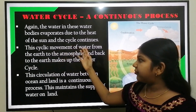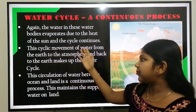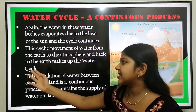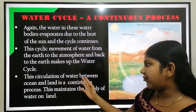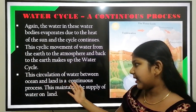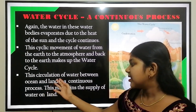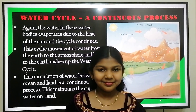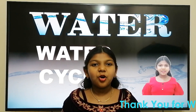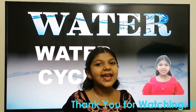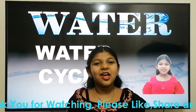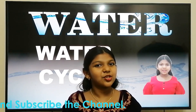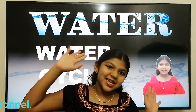This cyclic movement of water from the earth to the atmosphere and back to the earth makes up the water cycle. This circulation of water between ocean and land is a continuous process that maintains the supply of water on land. Thank you for watching — please like, share, and subscribe to my channel, and leave your comments below. See you in the next video!